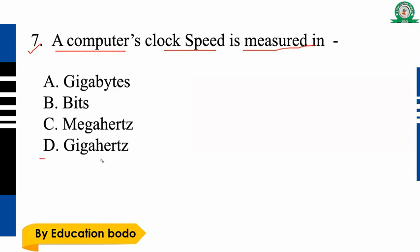Question number seven: A computer's clock speed is measured in what? Option D is GHz. If you want to see the clock speed, option D is GHz.